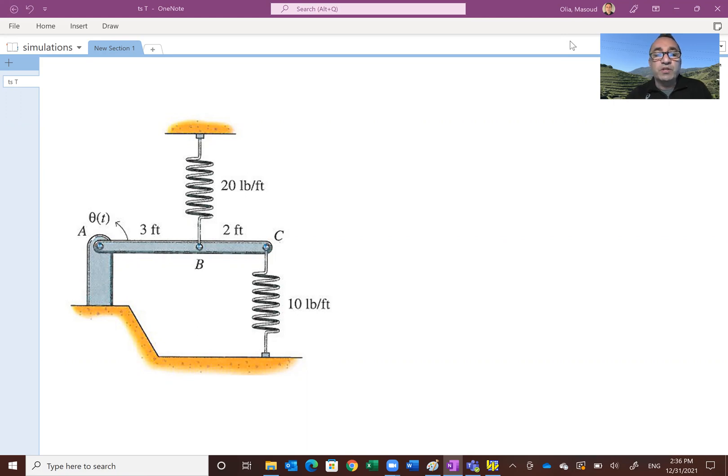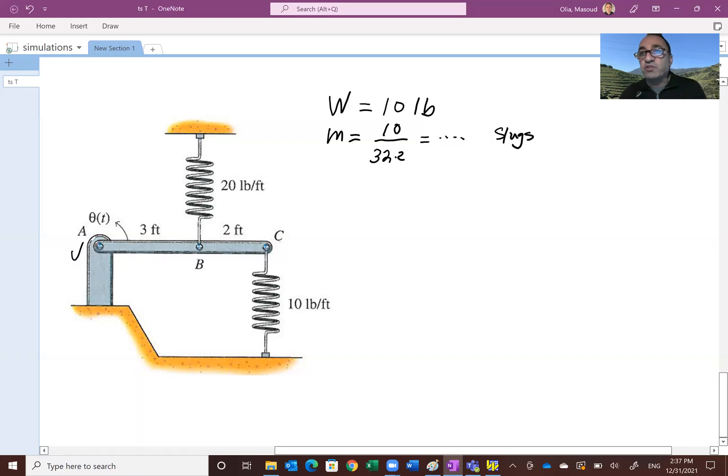This problem I have here is a mechanical system consisting of a rod, slender rod ABC, which is fixed or pinned at point A, and it's connected by two springs, linear springs with different stiffness: 20 pounds per foot at point B and 10 pounds per foot at point C. The weight of this rod is 10 pounds. Remember, the weight is 10 pounds, but the mass is 10 divided by 32.2, which is a fraction of one slug.